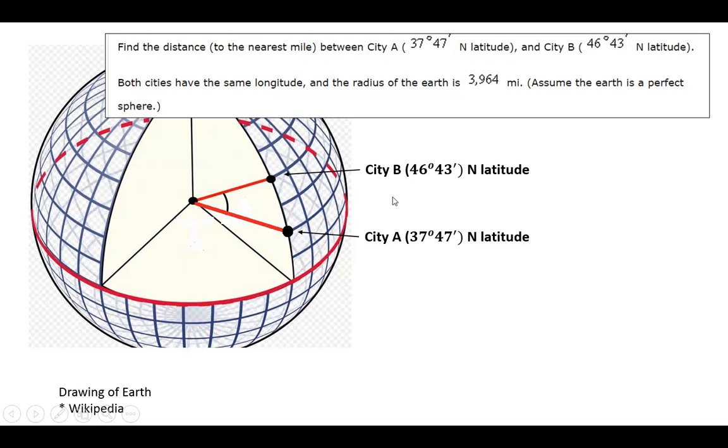Okay, so I borrowed this drawing of the Earth from Wikipedia, and I have located City A and City B on it.